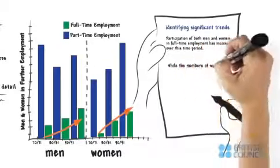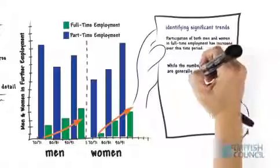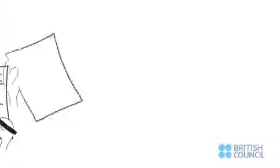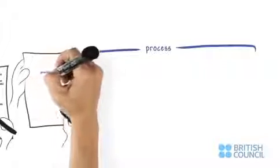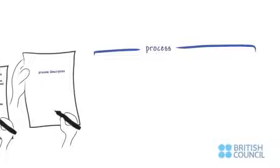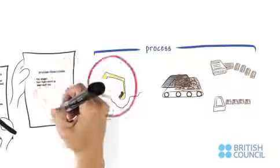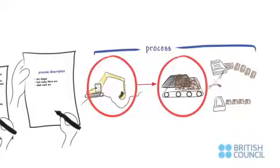However, while the numbers of women are generally increasing, the numbers of men in part-time employment are fluctuating. In a question requesting a process description, the overview might identify the key stages in the process. For instance, how many stages there are and what each are, briefly.